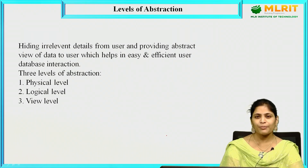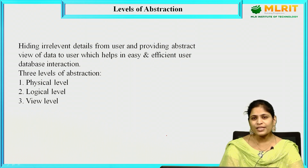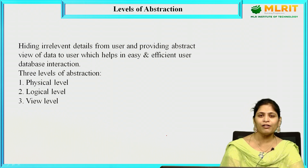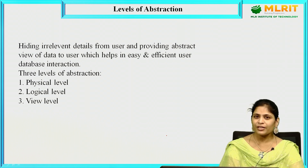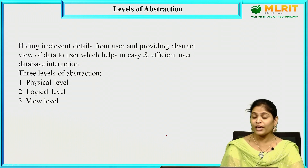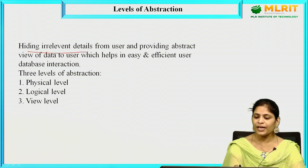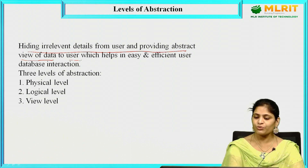We are going to discuss about the levels of abstraction. What is abstraction? Abstraction is nothing but hiding irrelevant data from a set of users. A user needs to interact with the database in terms of retrieving, updating, or deleting data, but he might not want the implementation details. Abstraction is hiding irrelevant details from the user and providing an abstract view of the data, which helps in easy and efficient user-database interaction.